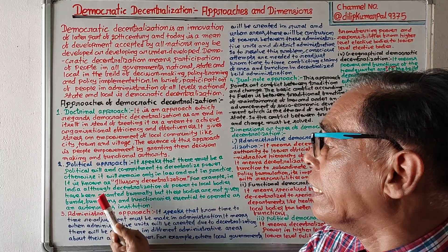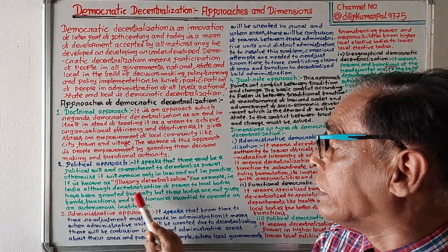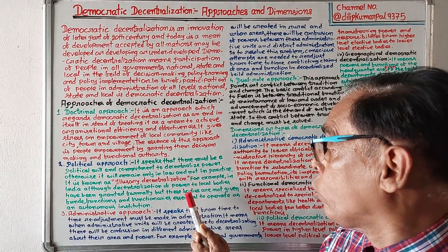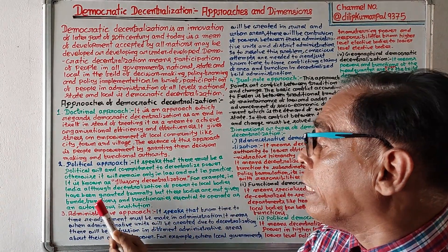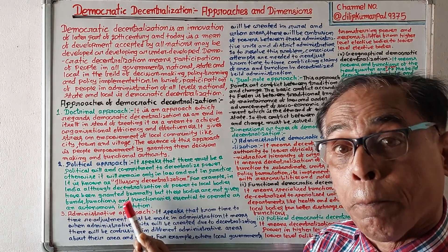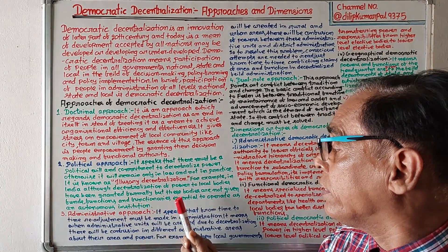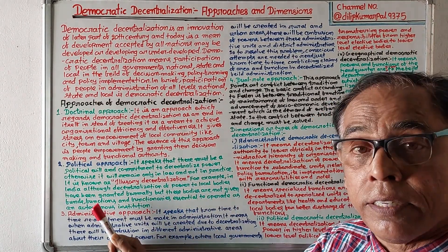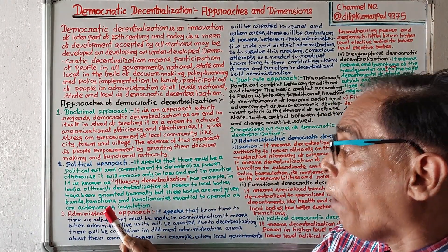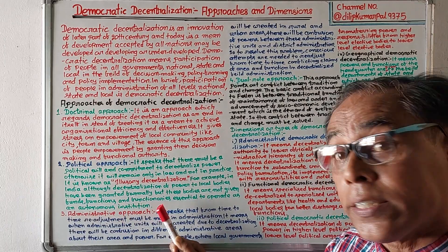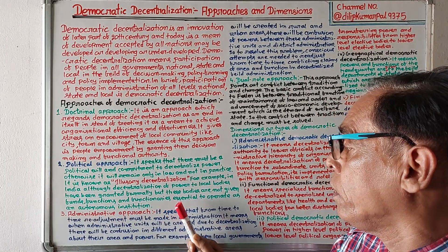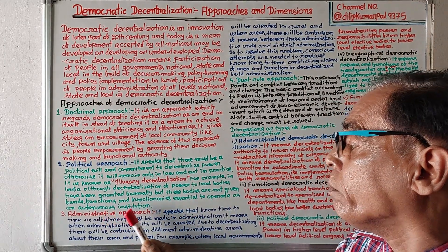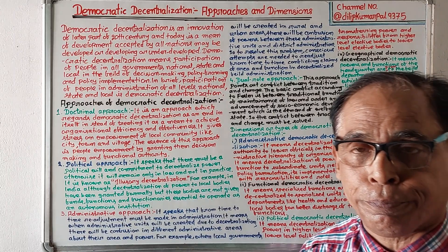For example, in India, although decentralization of power to local bodies has been granted formally, these bodies are not given funds, functions, and functionaries essential to operate as an autonomous institution.